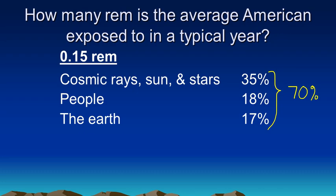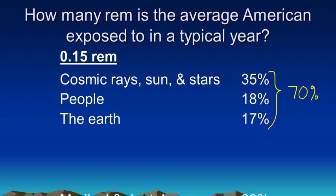The next few are artificial sources. These are from man-made sources. About 20% of your typical radiation exposure comes from x-rays. Medical x-rays, dental x-rays. This is a fairly high percentage, considering that most people don't get x-rays every day. Most people only get a couple of these every year.